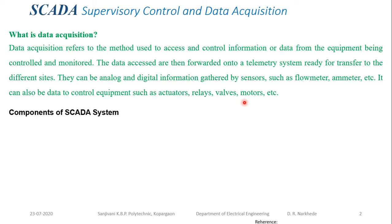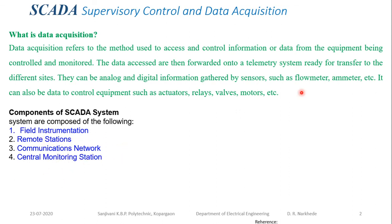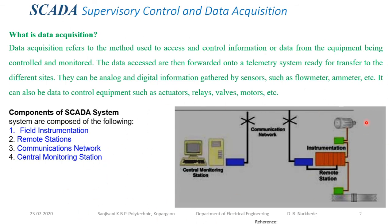What are the basic components of the SCADA system? There are four major components. The first is field instrumentation — various sensors and actuators placed in the field. The second is remote stations placed near the field instrumentation. The third is the communication network, which carries signals from field instrumentation and remote stations to the control room. The fourth is the control and monitoring station.